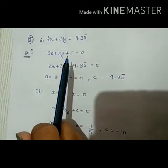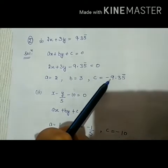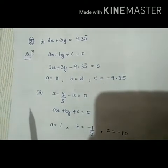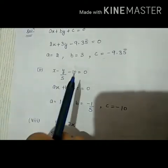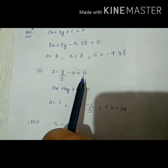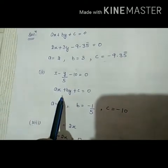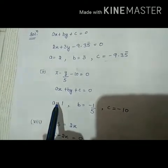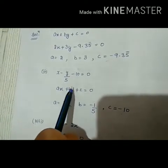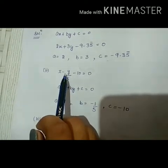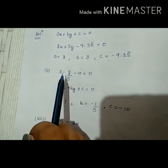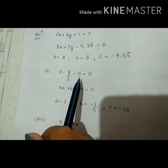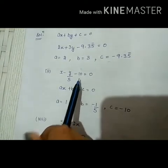Next question: x minus y over 5 minus 10 is equal to 0. Compare this with the standard equation. Looking at x — there is nothing extra in front of it, so the coefficient is 1, meaning a is equal to 1. For y, if we include the sign, b is equal to minus 1 over 5, that is minus 1.5. And c is equal to minus 10. Remember, we must take the sign into account.